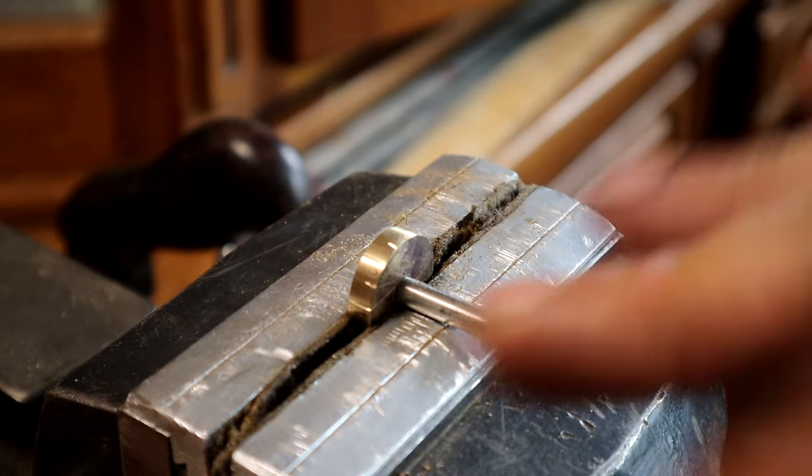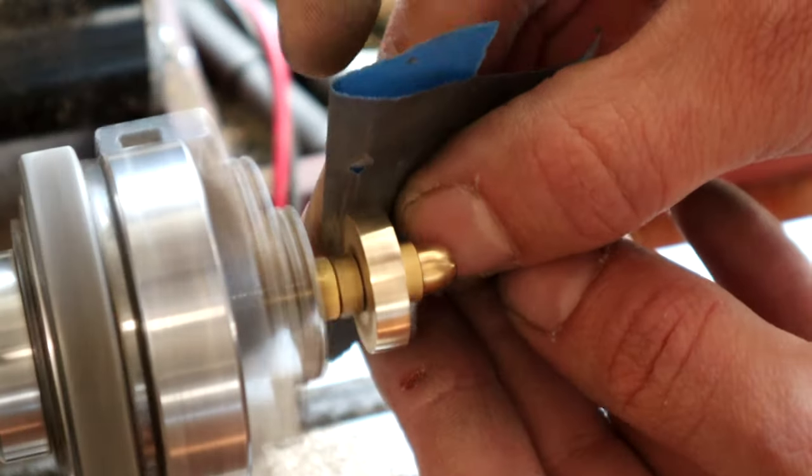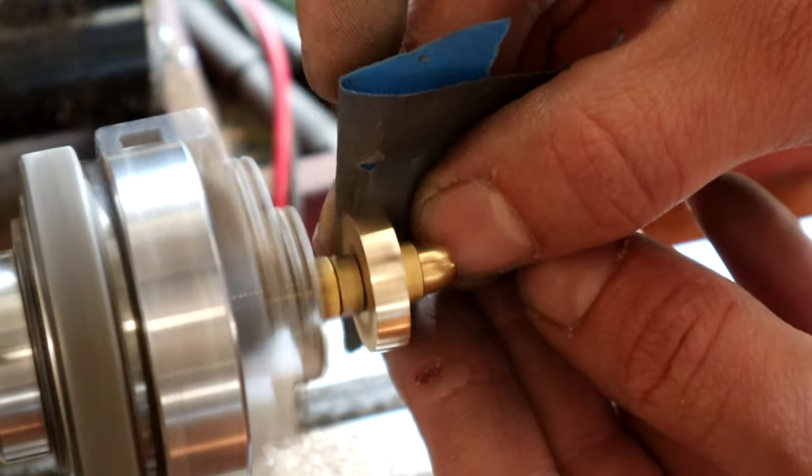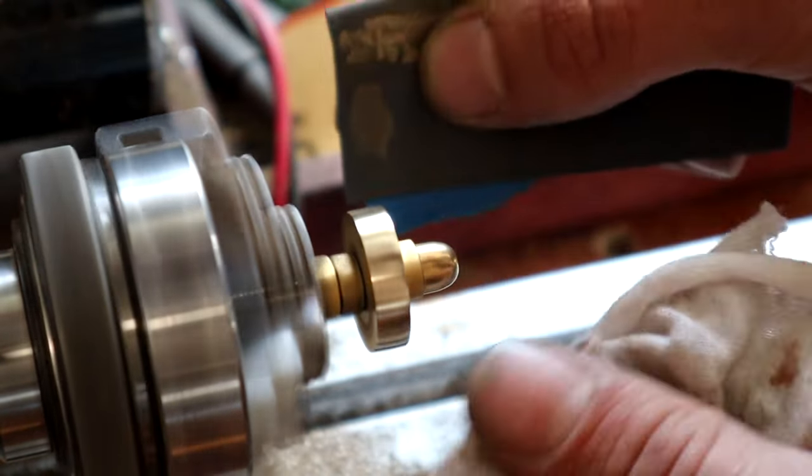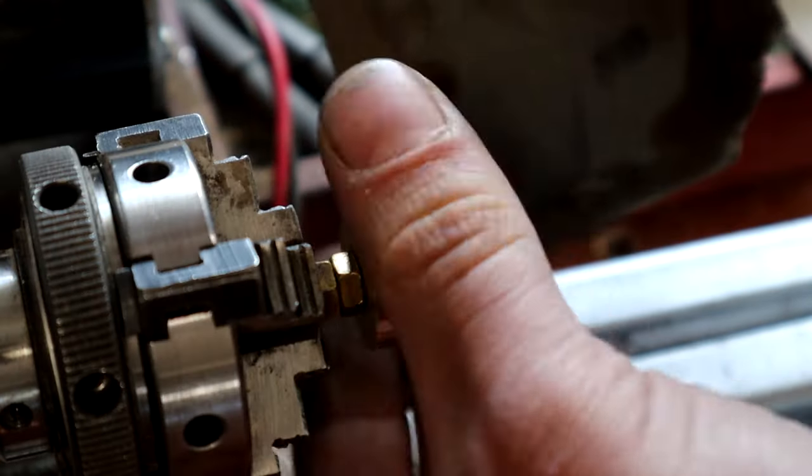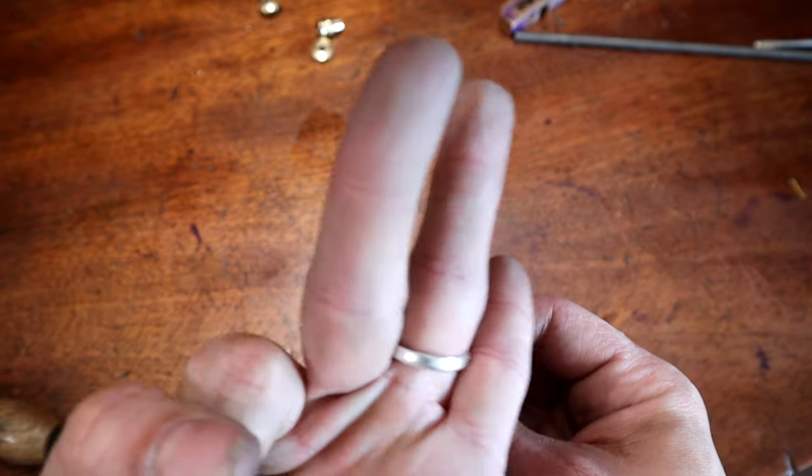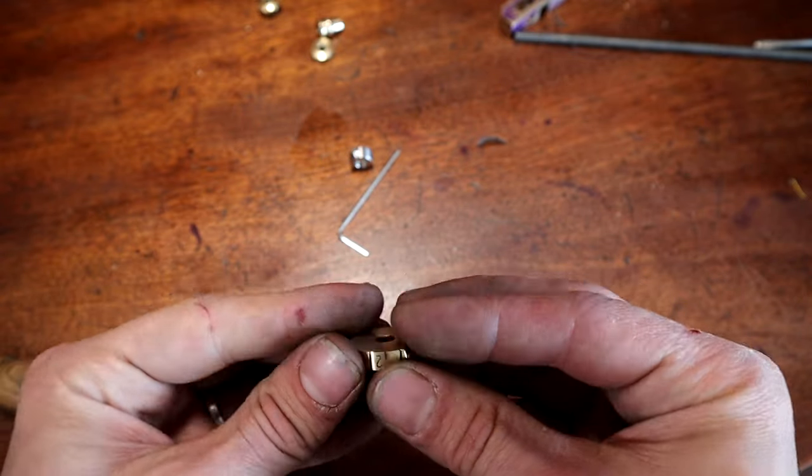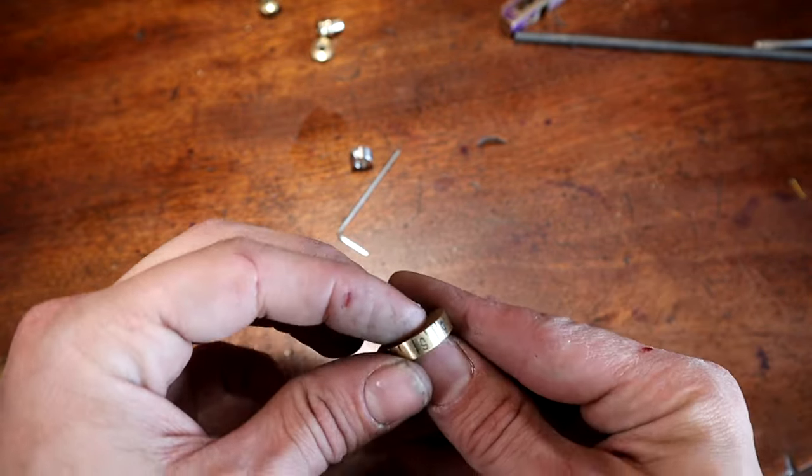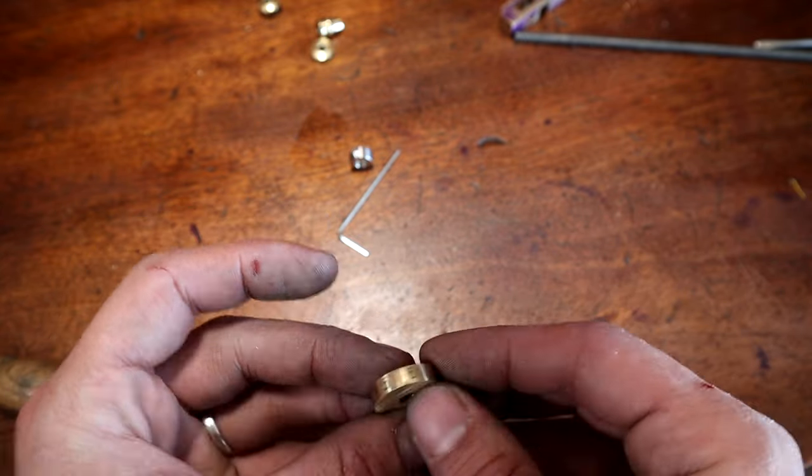So I got rid of the numbers because they're not looking good. So I've done it the third time with the punches, and now it looks a little bit better.